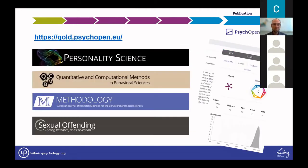ZPID offers the PsycOpenGold program, which produces open access journals like a commercial publisher. ZPID does not own these journals—they are owned by the editorial board or professional society, ensuring scientific independence. The key difference from a commercial publisher is that the journals using PsycOpenGold do not charge any fees: no APC for authors, no fee for editors or societies, and no paywall for readers. All costs are covered by ZPID. Currently, ZPID publishes 11 journals in different fields of psychology.